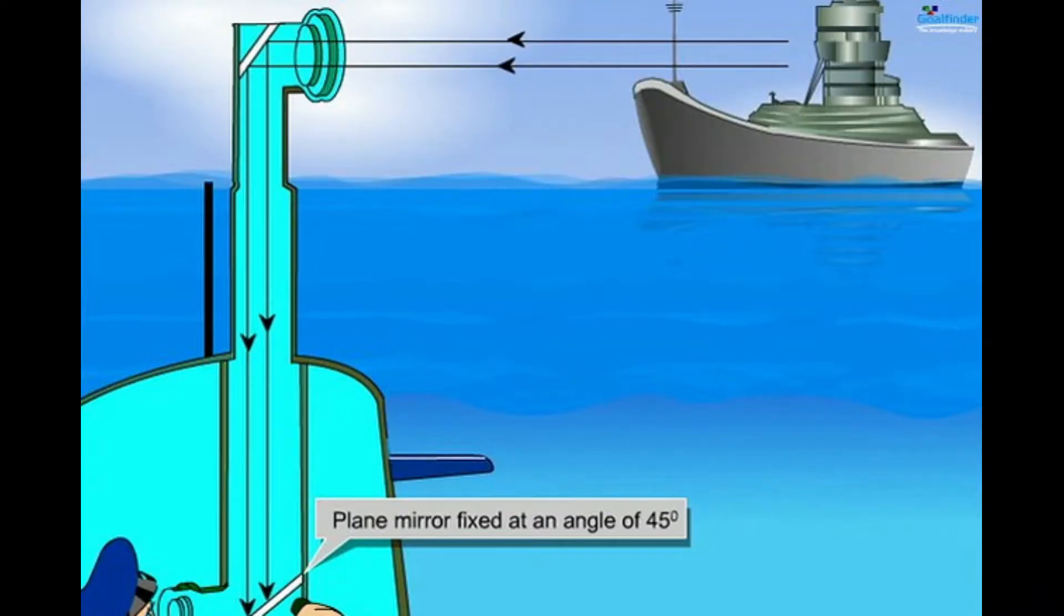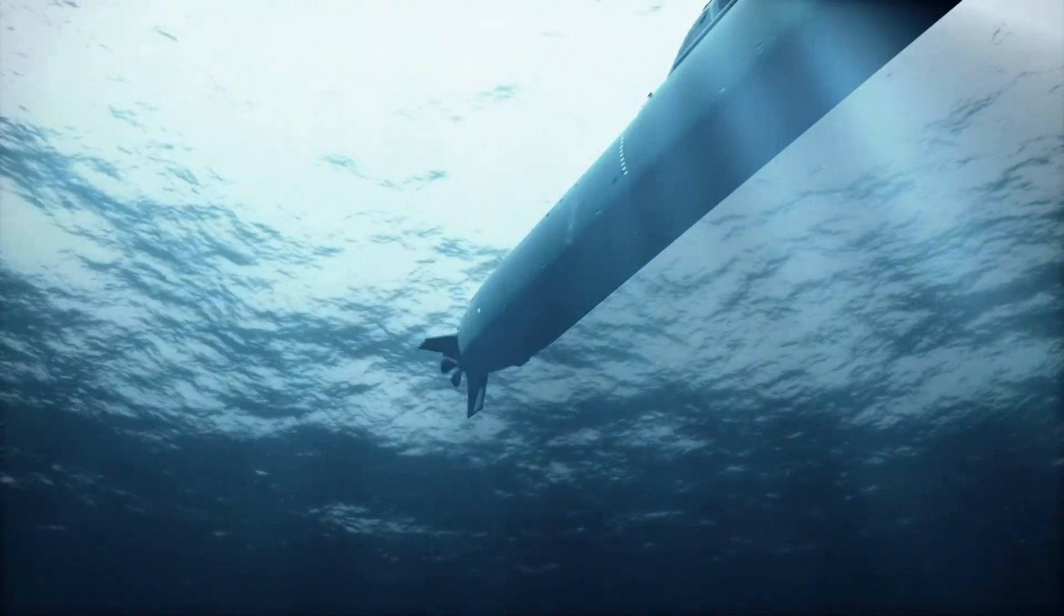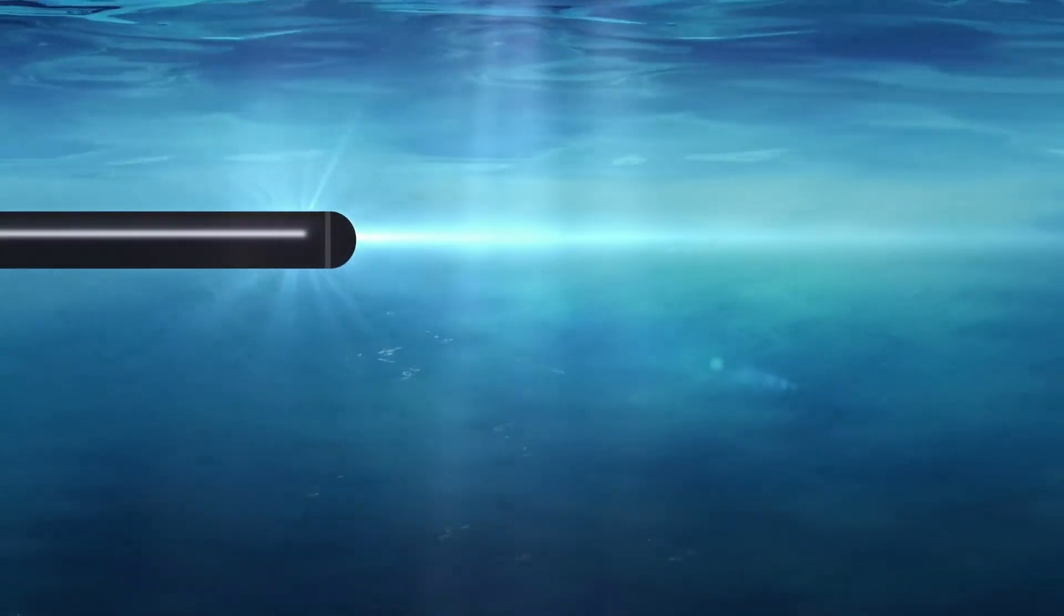For example, a periscope can allow a submarine to see a ship while it's still under the water. In times of war, this would allow it to shoot a torpedo at the ship before the ship knew the submarine was close by.